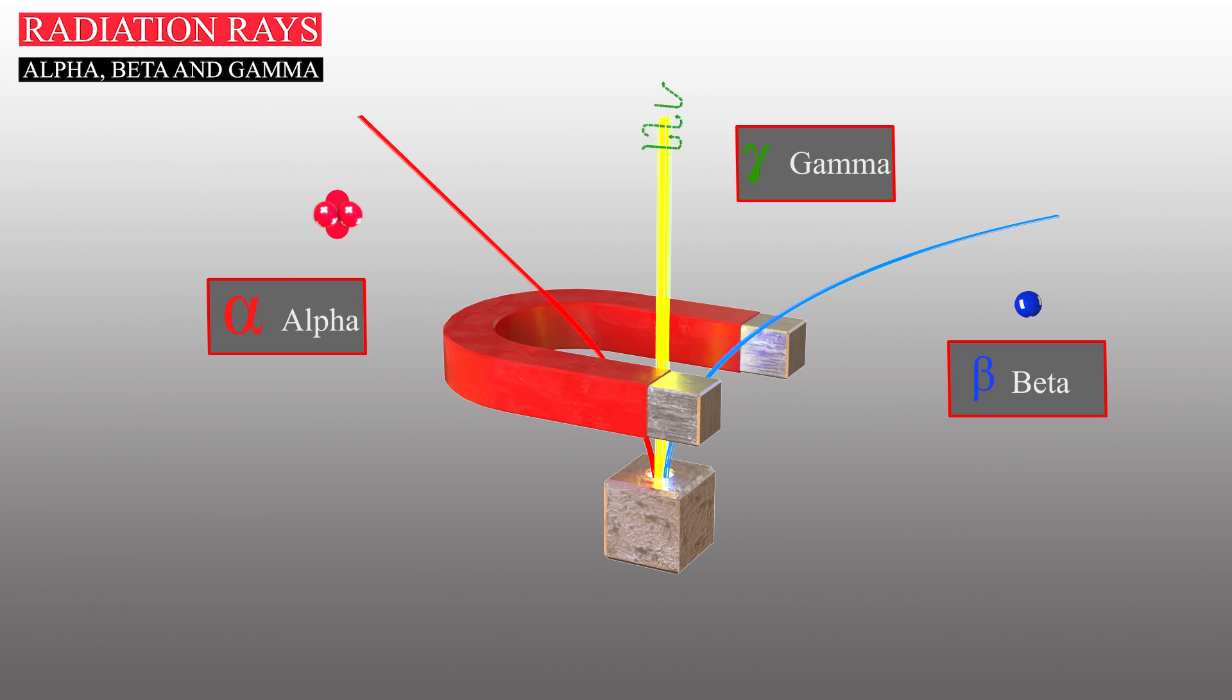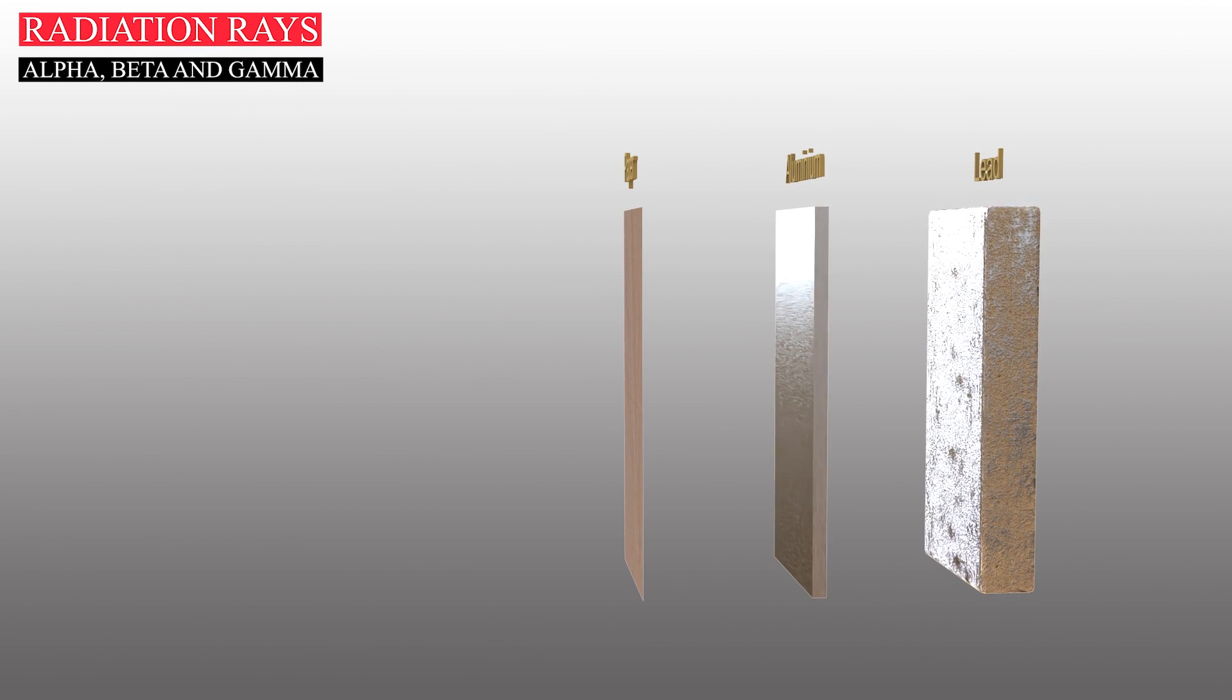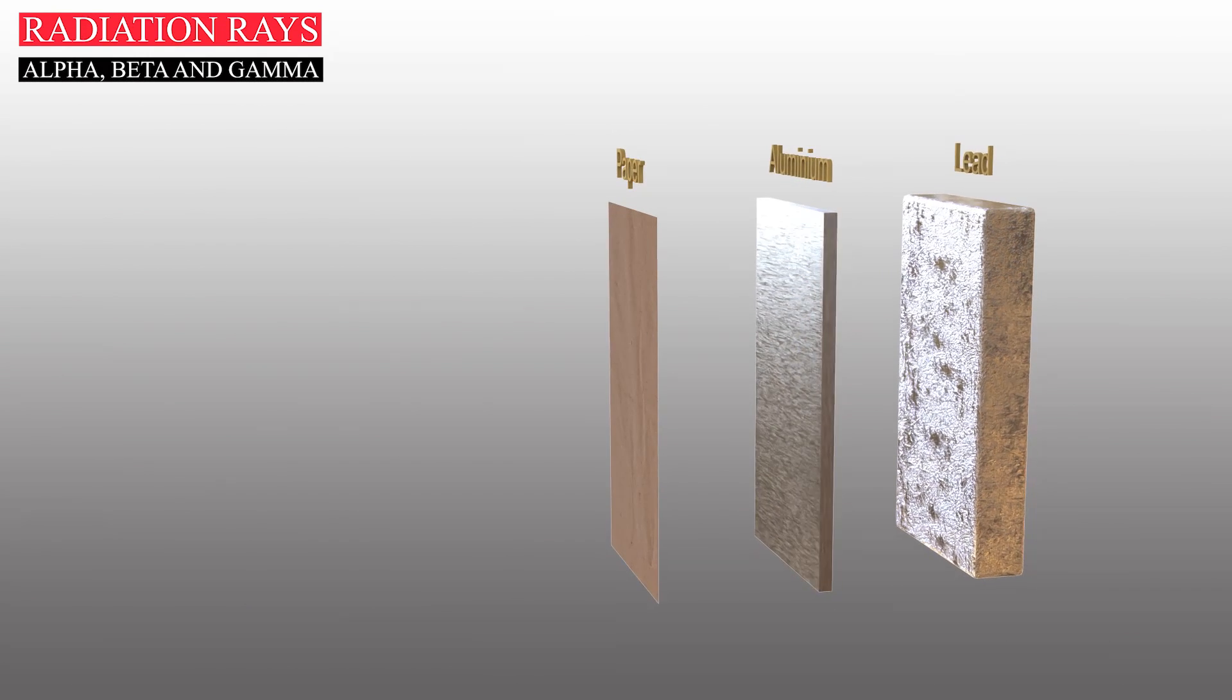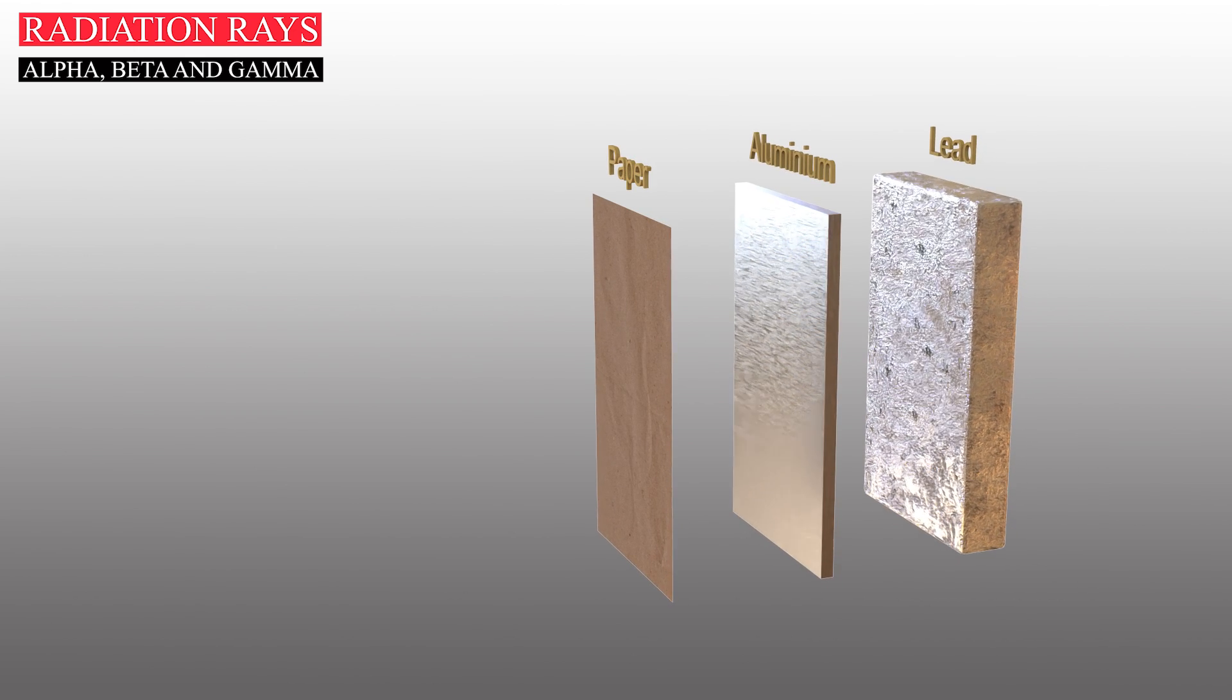Gamma rays are pure energy because they have no mass or charge and are not affected by magnetic fields. The ability of these three kinds of radiation to penetrate different materials is affected by their unique characteristics.